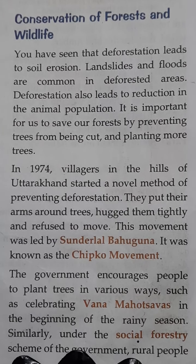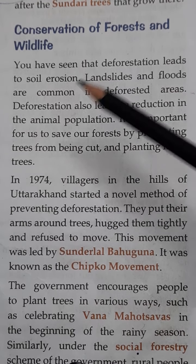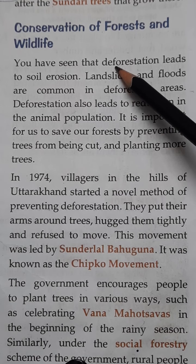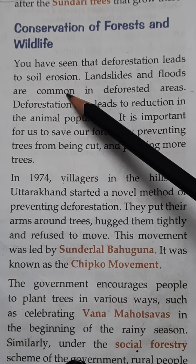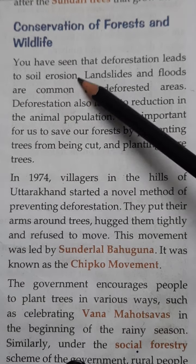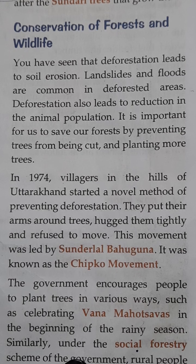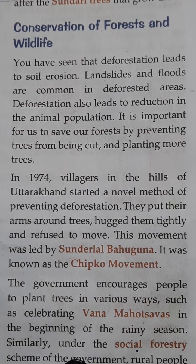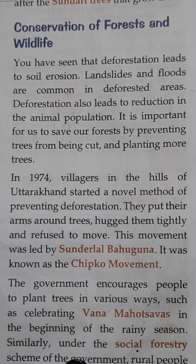Number 5 is tidal forest, also known as marshy forest, shown in blue on the map. These forests are found in the deltas of rivers such as the Ganga, Mahanadi, and Godavari. The Ganga delta is known as the Sundarbans.